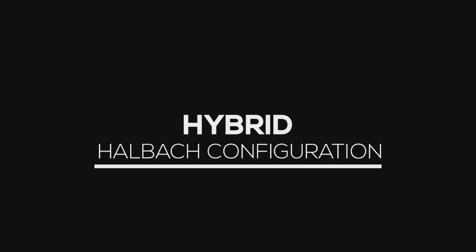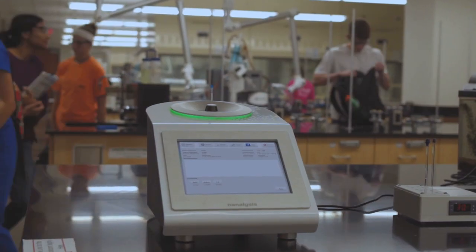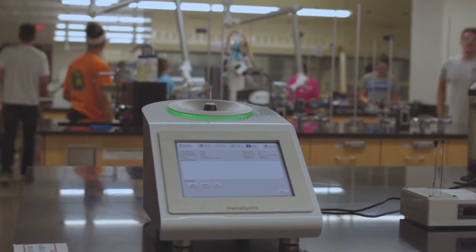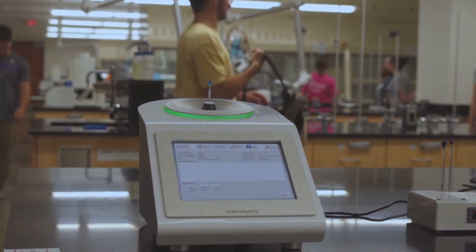We used newly available rare earth magnets and we use them in what we call a hybrid Halbach configuration. We felt that the market really wanted an NMR spectrometer in a single unit that could be moved from laboratory to laboratory, both in a teaching laboratory situation and also in a routine quality control or research setting.